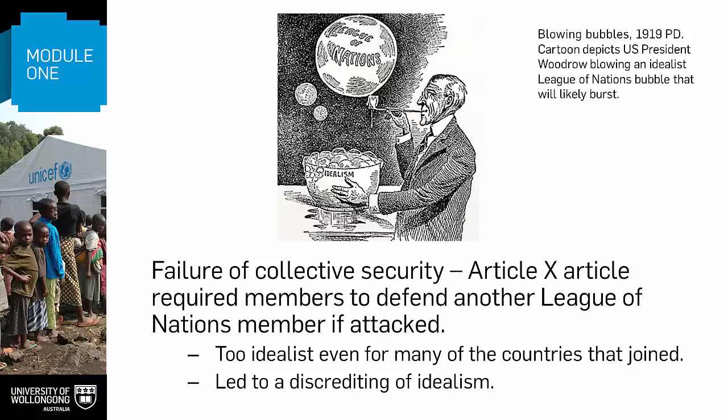Even though collective security was championed by Wilson, it was a key reason that the US didn't end up joining the League. The traditional isolationist elements in the US opposed the League's articles requiring members to defend another member if it was attacked. This is the apogee of idealist approaches to international relations, requiring nations to act possibly against states that they themselves considered friendly, and in ways that could endanger their pursuit of their own national interest. All this potentially in support of states for which they had no affinity — this was too much for the isolationist factions in the US, and given their strong political influence, the US didn't join.